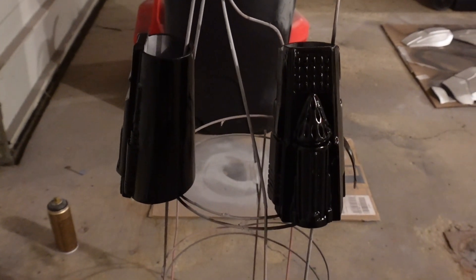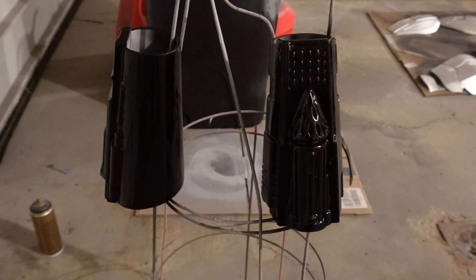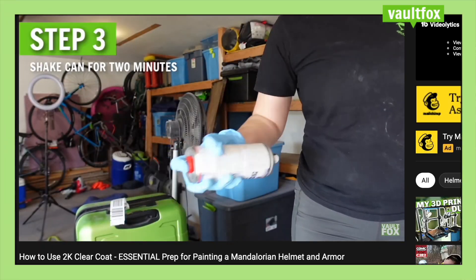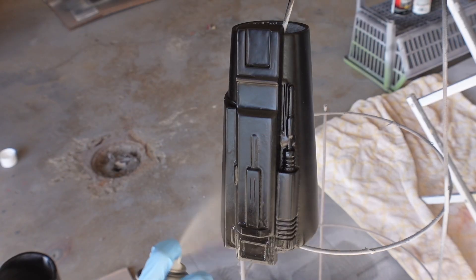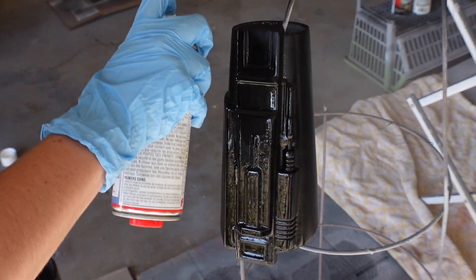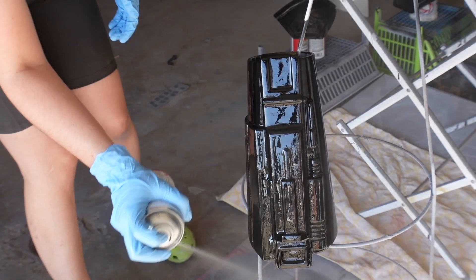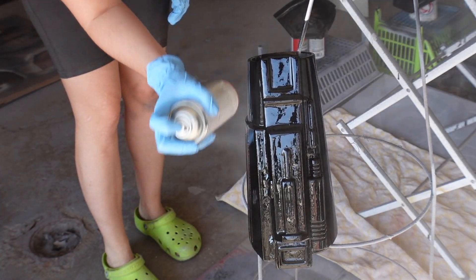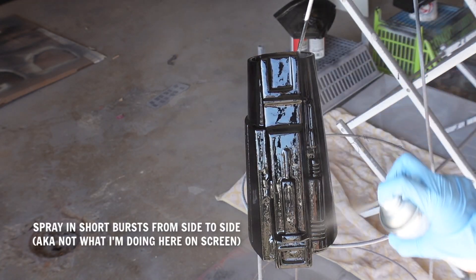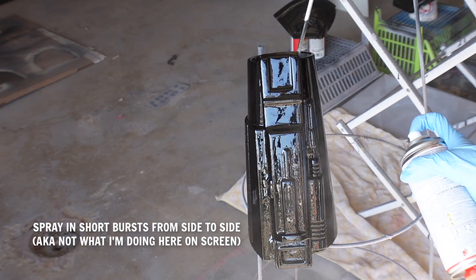I then let both of these pieces cure for a full 24 hours before going in with my glossy clear coat to prep for the chrome. I go over the entire process and safety procedures of using 2k clear coat in this video here but on the gauntlets I'm just giving them a quick first coat of 2k clear coat, letting that cure for 5 minutes, then going back in with another thin coat and letting that cure for another 5 minutes before giving it a final wet glossy coat and letting that cure for a full 72 hours.